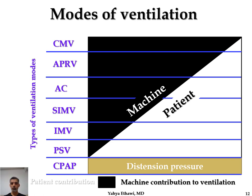In APRV, the machine provides a continuous high PIP most of the time, and then intermittently releases to a low pressure — so the low pressure is what functions like the PEEP. It is a reverse ventilation concept and we do not use it in neonates. Assisted control is about 50-50 between machine and patient. IMV is not synchronized and provides only the backup PEEP rate. PSV is similar to assisted control, except you set a wide inspiratory time and the patient decides how much inspiratory time they want.